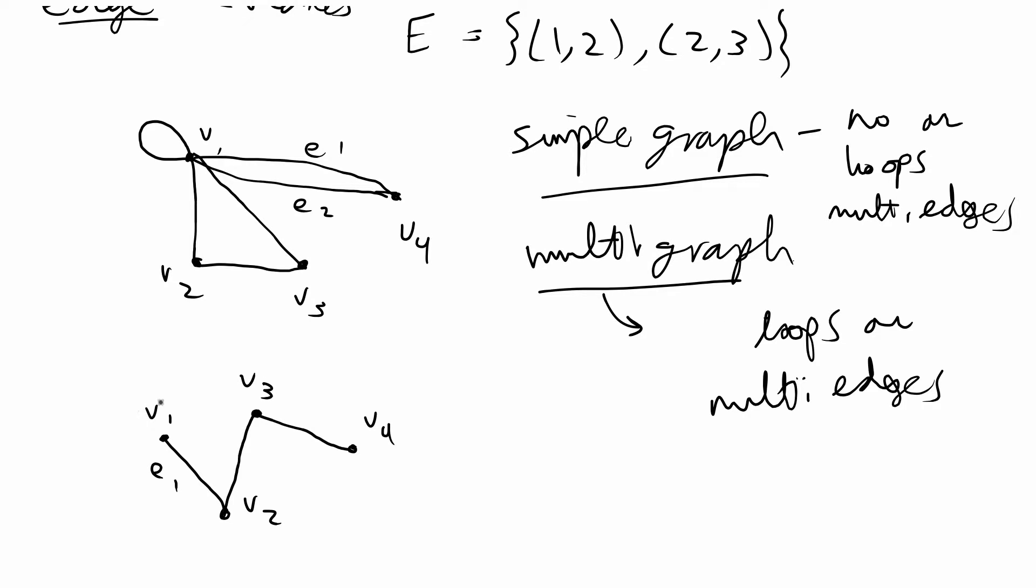Some graphs have label information while others don't and also some graphs have directional information while others don't. So for this example of a graph this does not have directional information. We don't know if E1 is heading toward V1 or away from V1 and towards V2. Some graphs have this information and they're called directional graphs. So if we have directional arrows pointing toward or away from the vertices then these are called directional graphs. The opposite of that is called an undirected graph. These can also be called digraphs.